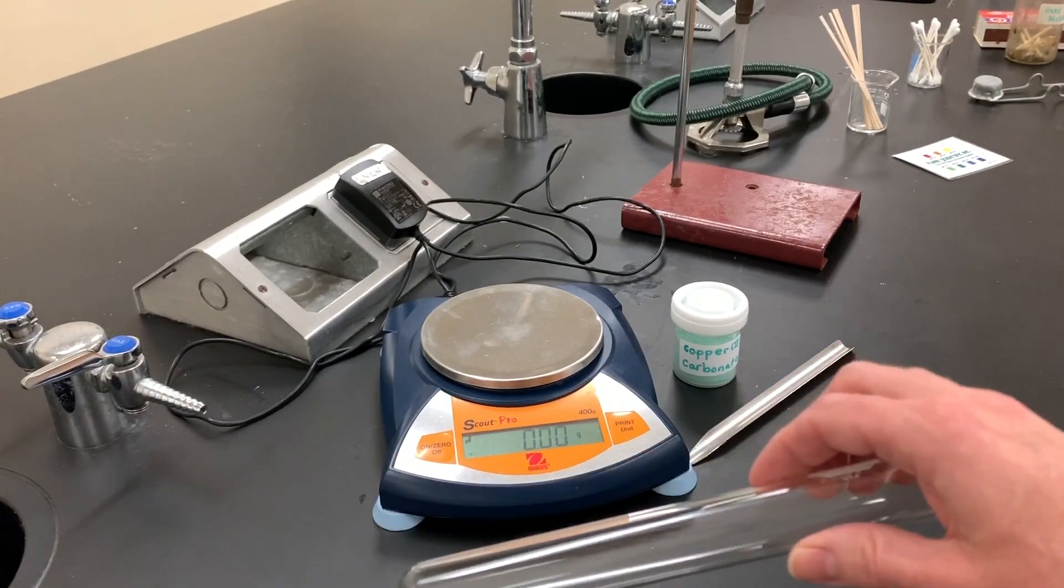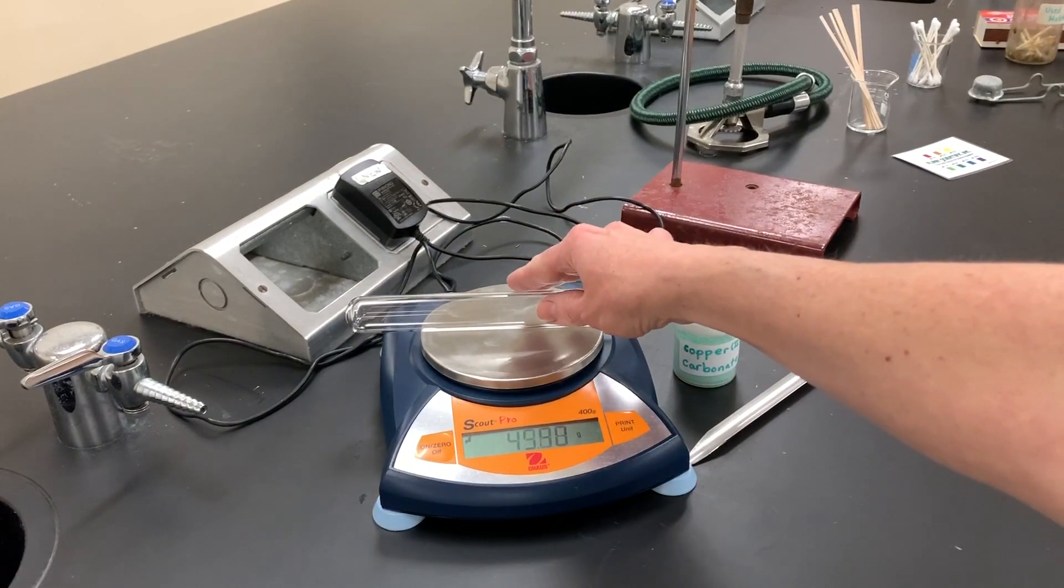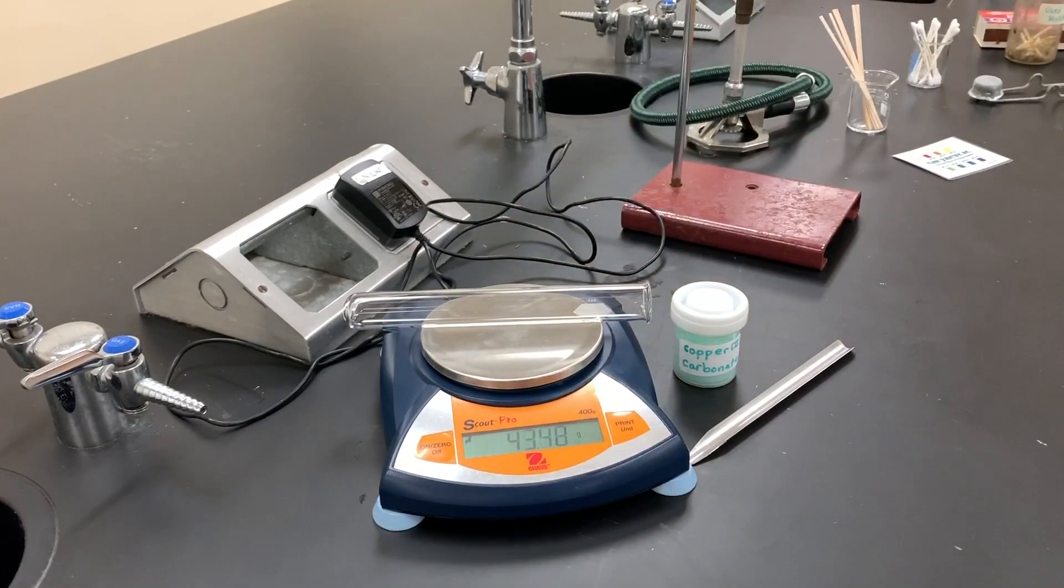Place the test tube gently on the balance so it doesn't roll off. Make sure it's stable, then record that original mass. In this case it looks like 43.45 grams in your data table.